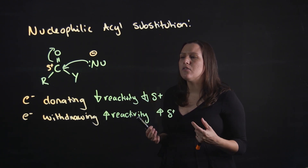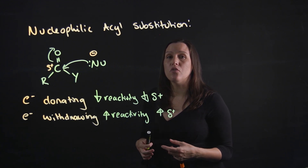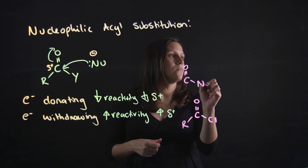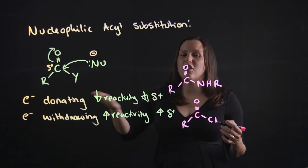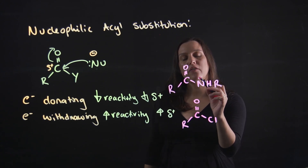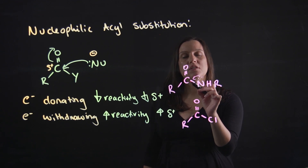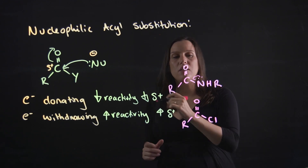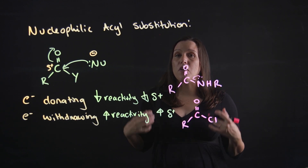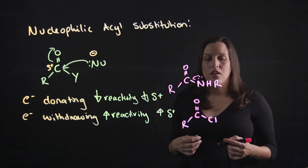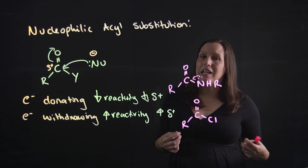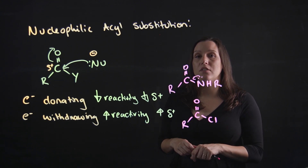The types of electron donating and electron withdrawing groups are as follows. Electron donating groups include amides — the nitrogen has a lone pair of electrons that it pushes toward the carbon, donating electrons in and decreasing that positive charge. If we have a halogen attached, it pulls the electrons onto itself because it's very electronegative, making that carbon a lot more positive.